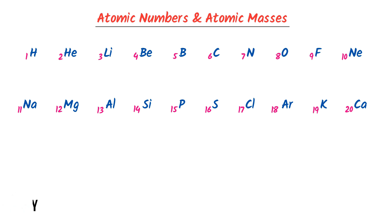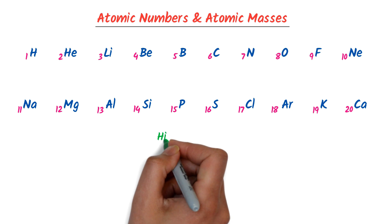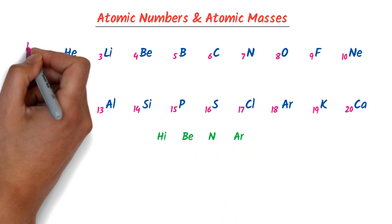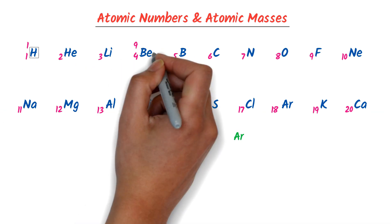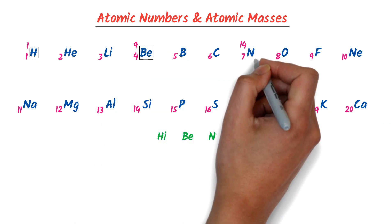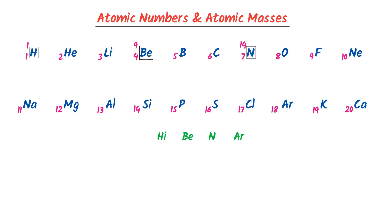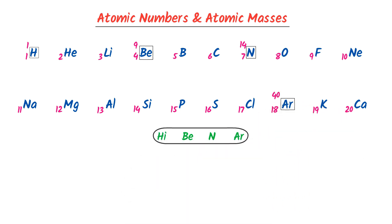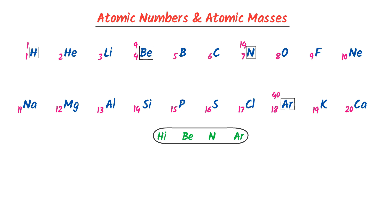Now, what about atomic masses? To learn the atomic masses, I write H, Be, N, Ar as special cases. The atomic mass of Hydrogen is 1, the atomic mass of Beryllium is 9, the atomic mass of Nitrogen is 14, and the atomic mass of Argon is 40. Except these four elements, we can easily learn the atomic masses of the other elements using a common trick.